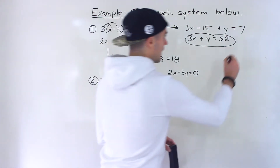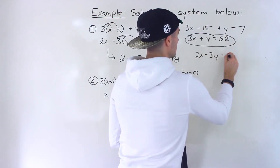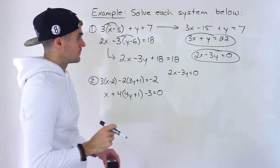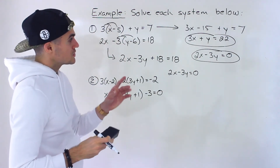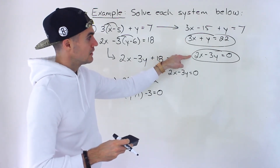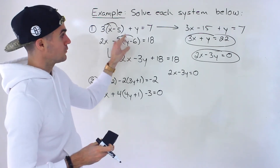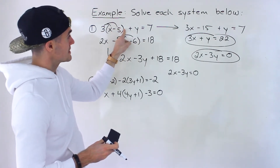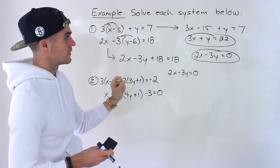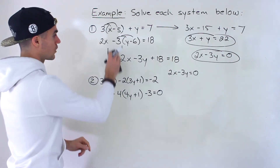So we have 2x minus 3y equals 0 as a second equation. The solution — the point of intersection between these two lines — is the same for both systems since both of these are the same question. In fact, this line and that line are the same. And now these simplified forms are much easier to work with.